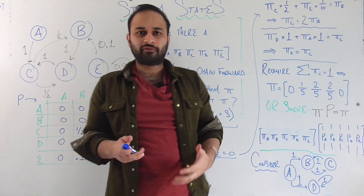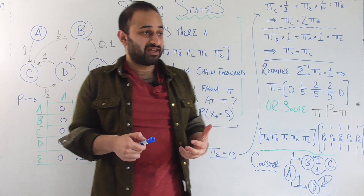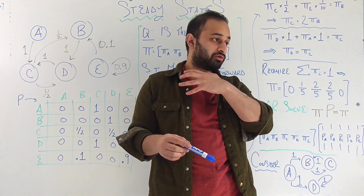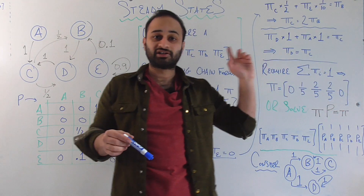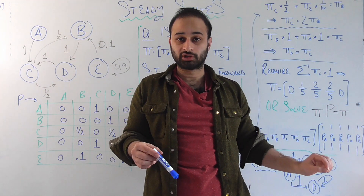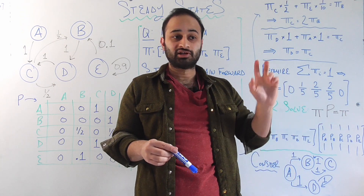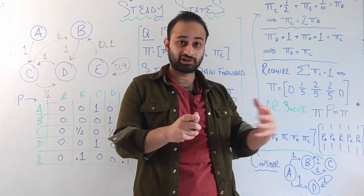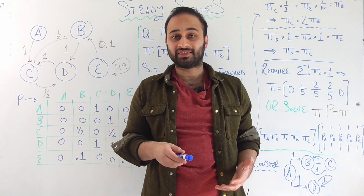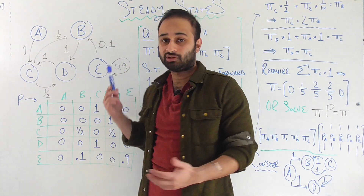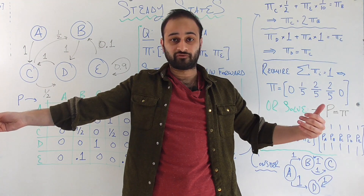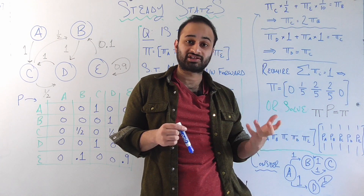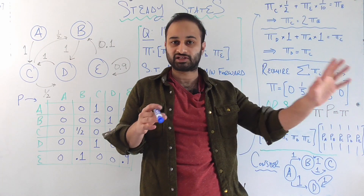Let's think about why this is useful intuitively. What this is saying is that there is some probability distribution such that if I allow the chain to proceed into the future as long as it wants, if I start at that distribution it's going to stay at that distribution. In data science and statistics, we care a lot about that predictability — about things staying at certain distributions. Especially in future videos when we're trying to sample from some known distribution, this will be a very powerful concept.